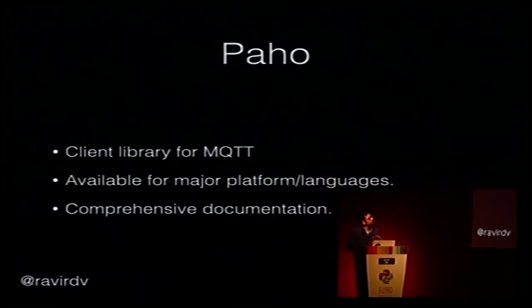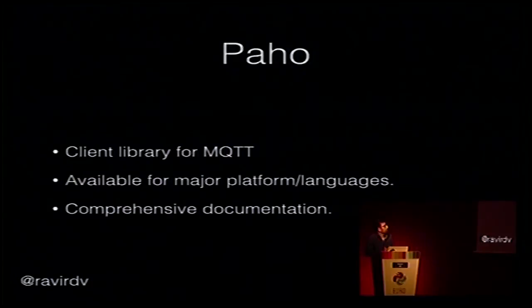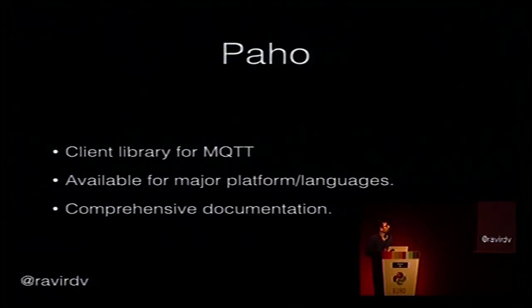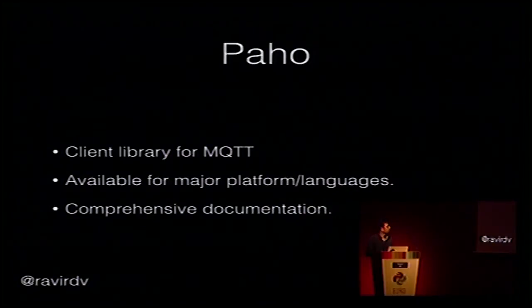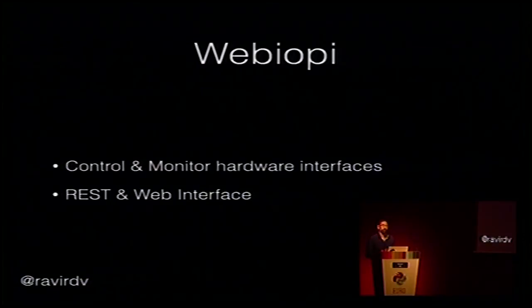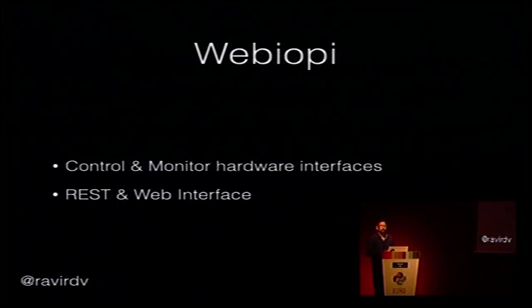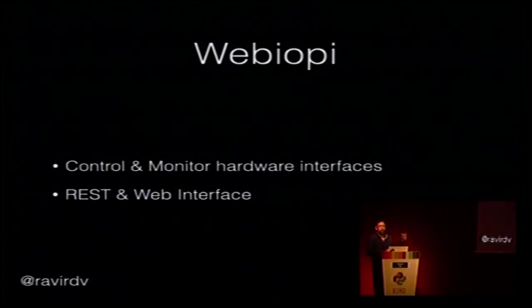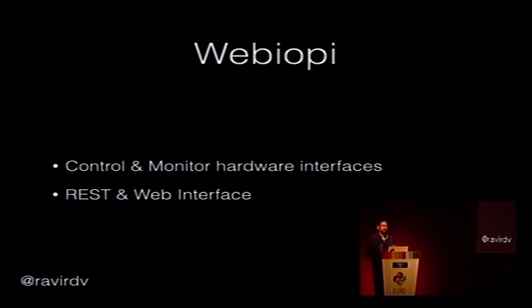MQTT is similar to HTTP but mostly binary. People use protobufs with MQTT to make a communication network between devices, and it also supports the pub-sub model. There is also an interesting library called WebIOPy. You install it on your Raspberry Pi and it lets you access, see, and monitor all IO controllers and inputs. You can control GPIOs using a web-based UI. It also provides a REST interface, so for basic applications you may not even need to write any code on the embedded end.